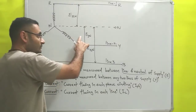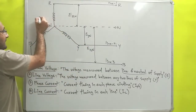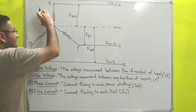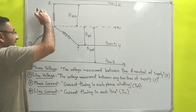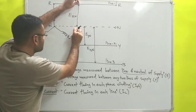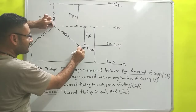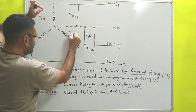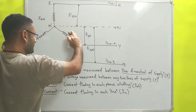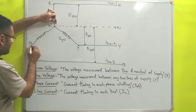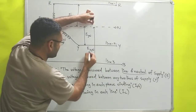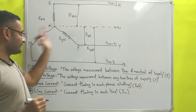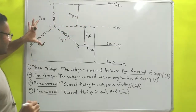The same phase voltage can also be represented directly on the phase itself. Between the two terminals of R-phase, whatever potential exists is the phase voltage — E-R-N. Similarly, between the two terminals of Y-phase, the phase voltage is E-Y-N. And between the two terminals of B-phase, the voltage is E-B-N. So there are two types of representations: either on the line-neutral pair or directly on the phase.